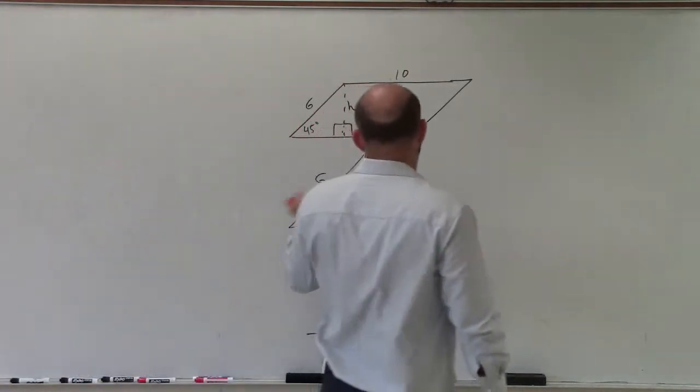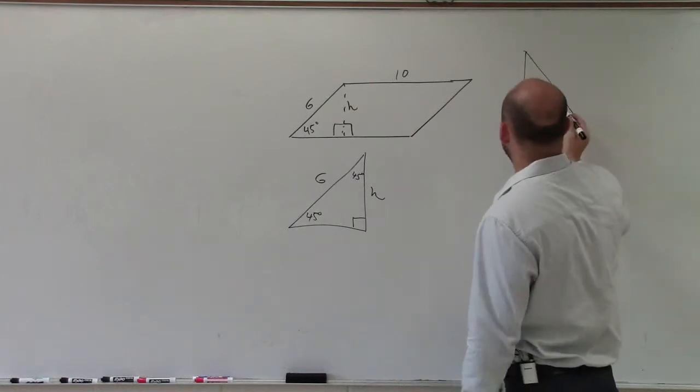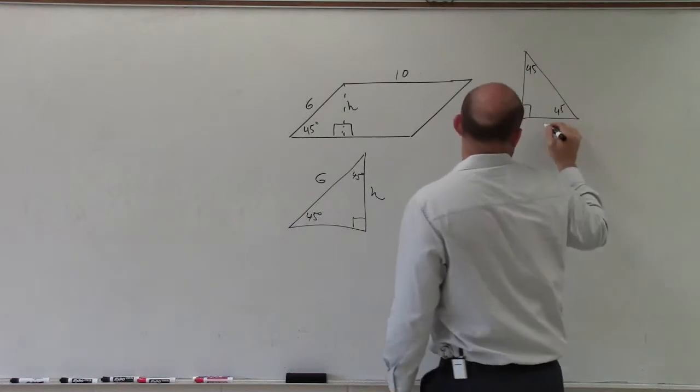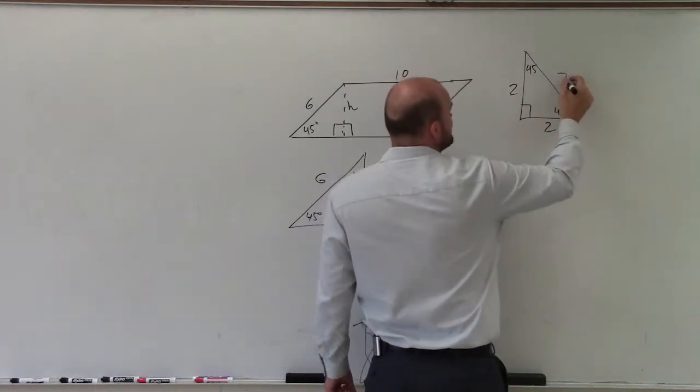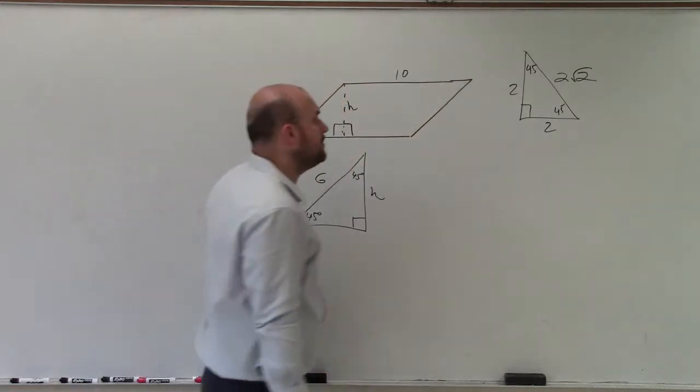So how do I go from my hypotenuse to my leg? If you remember how we go from a leg to a hypotenuse of a 45 degree triangle, if this was 2 and this is 2, to go from my leg to my hypotenuse, I have 2 times the square root of 2.